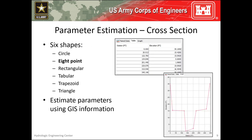HEC-HMS allows you to specify the required cross-section information in six ways. I personally prefer to use the 8-point cross-section shape when using this method. Depending upon the chosen shape, additional information will have to be entered to describe the cross-section. All the required parameters can be estimated using GIS information. In the example shown here, I took a field-surveyed cross-section and simplified it to just 8 points, which can be done fairly rapidly.